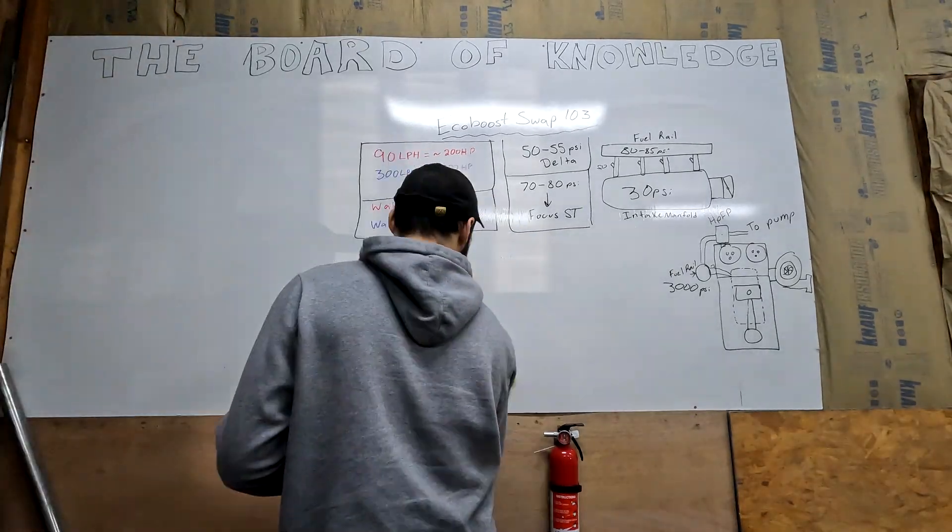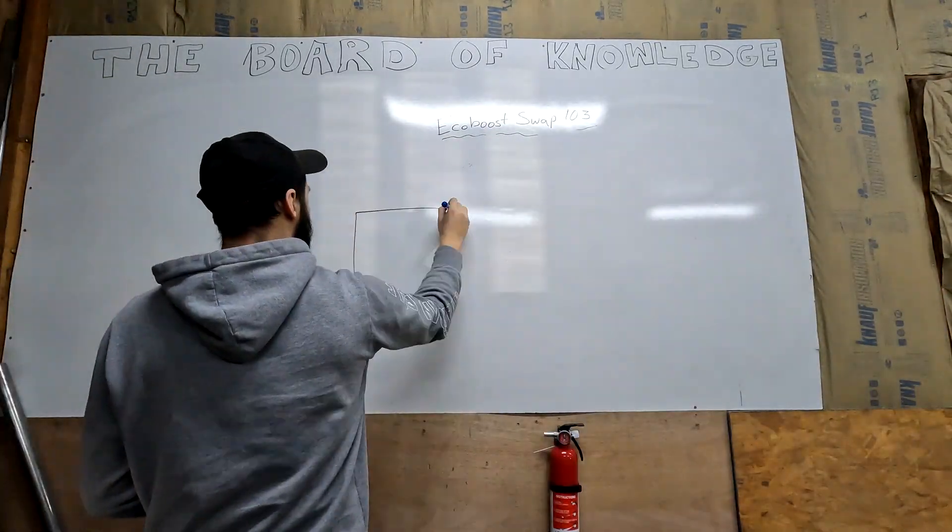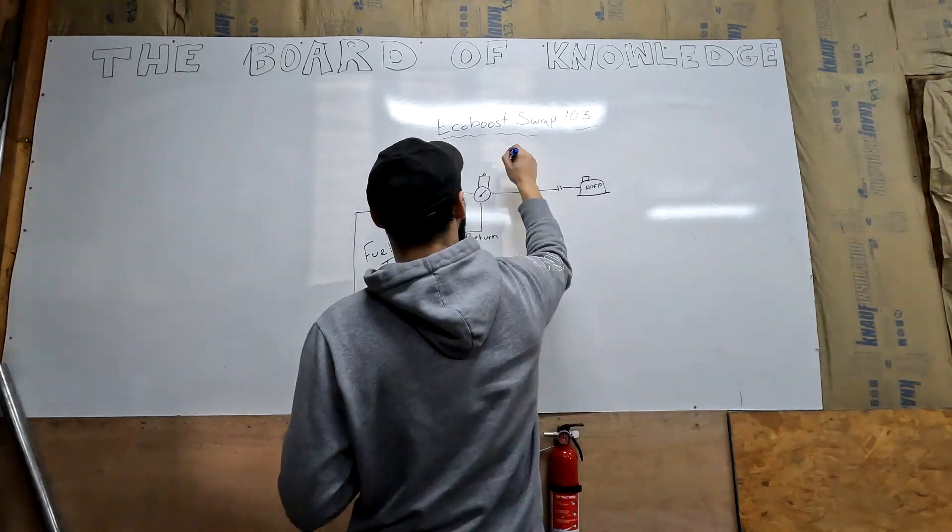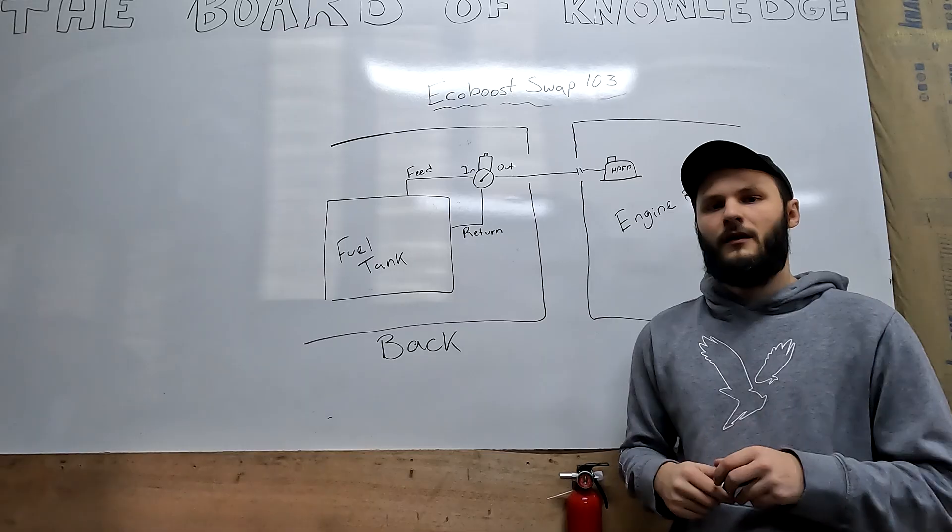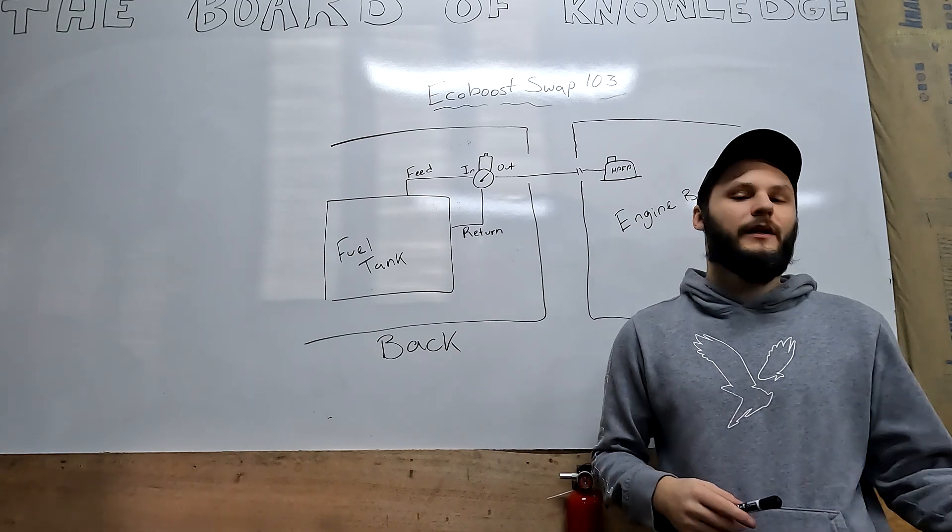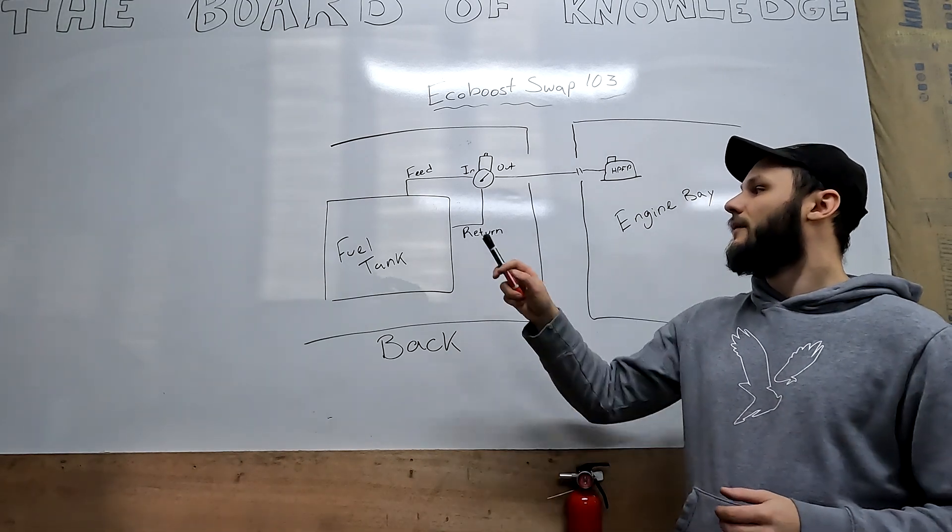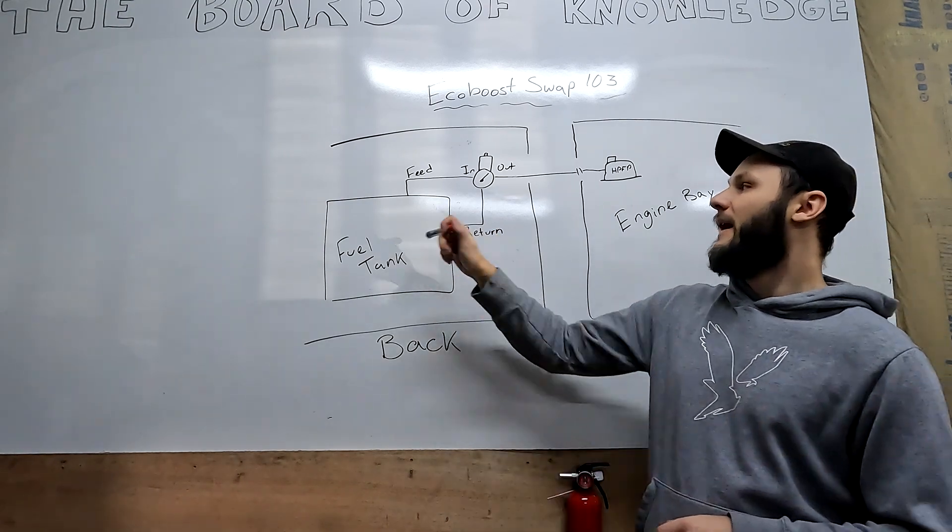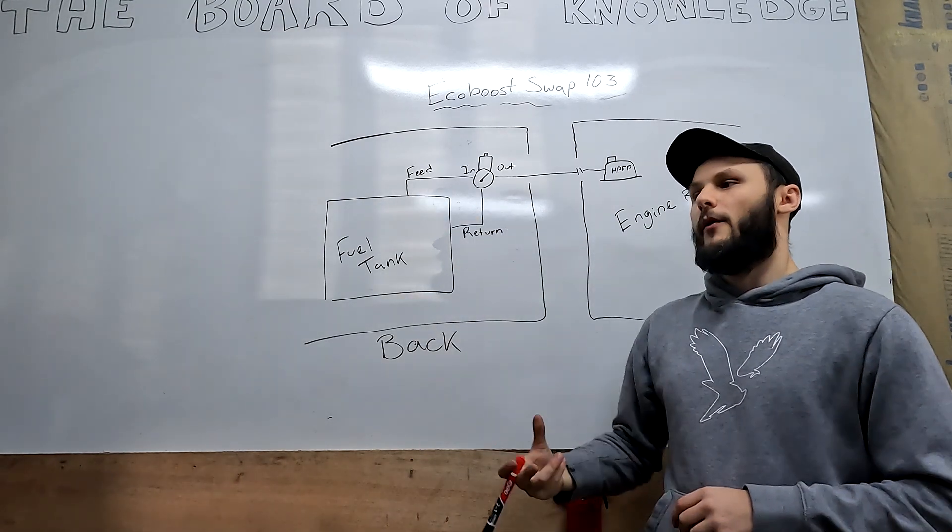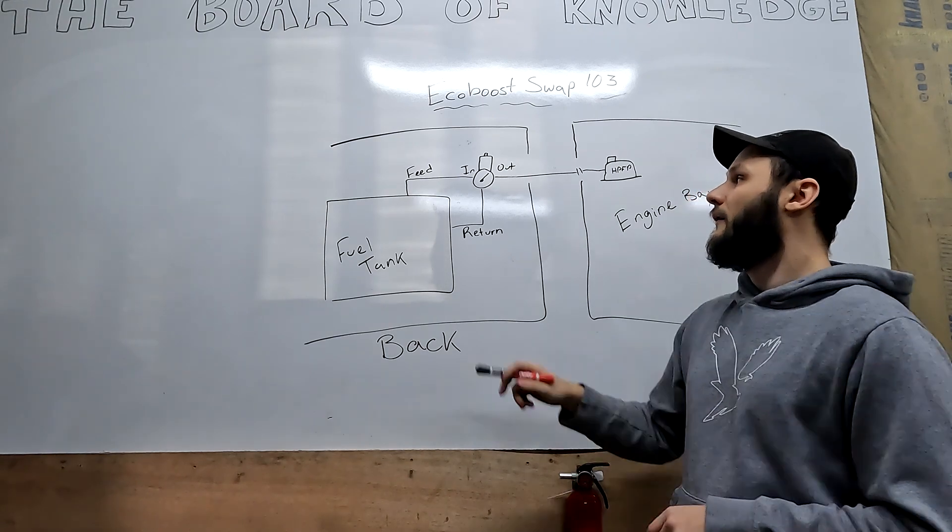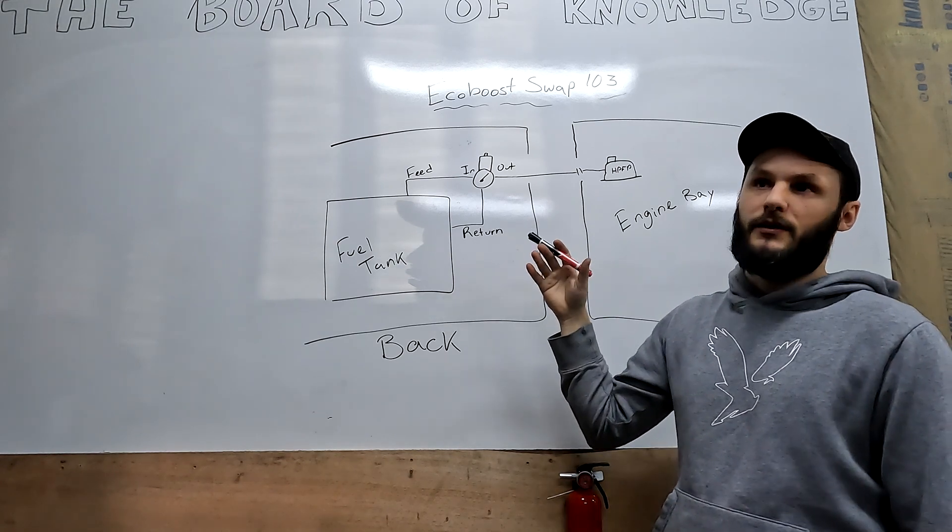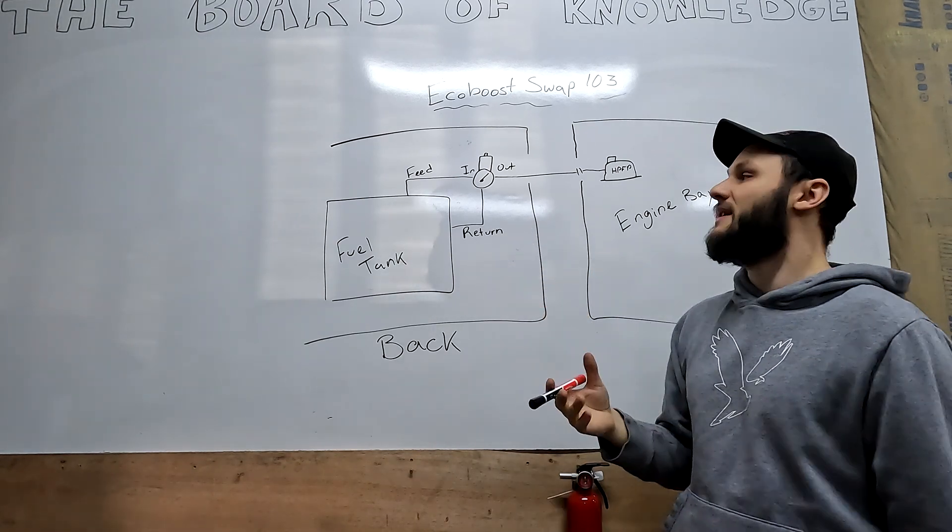What I've done on my car here is put a 450 liter per hour pump in the tank. Coming out of the tank, I'm feeding into an Aeromotive fuel pressure regulator with the fuel pressure regulator set at 80 psi.